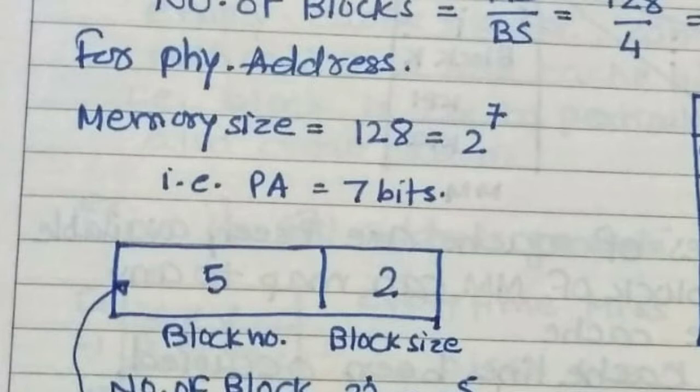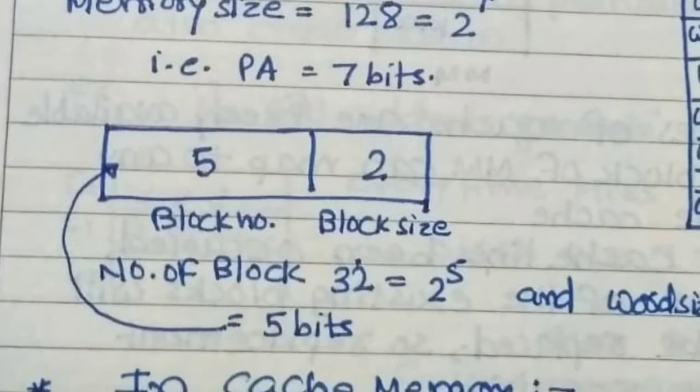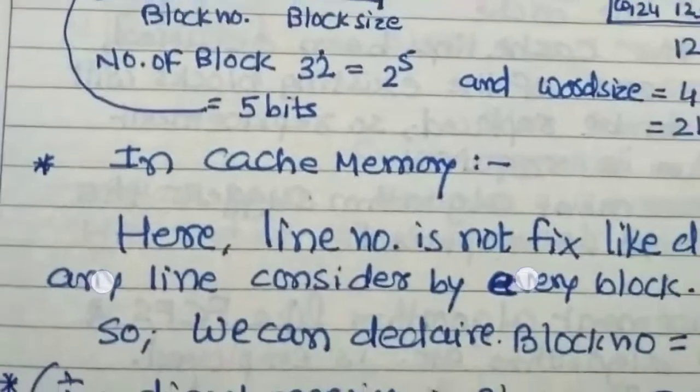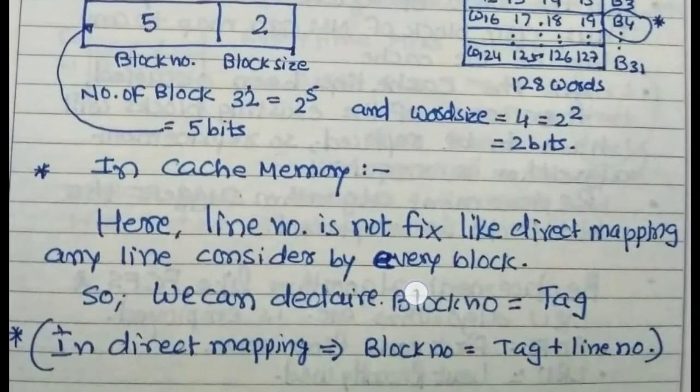For the physical address, memory size equals 128 equals 2^7. It means PA equals 7 bits. The physical address is 7 bits divided into two parts: block number and block size. Here block size is 4 words per block. This is 2^2, meaning 2 bits for block size and remaining 5 is the block number, because 32 equals 2^5 means 5 bits. In cache memory, line number is not fixed like direct mapping, so we can declare block number equals tag.